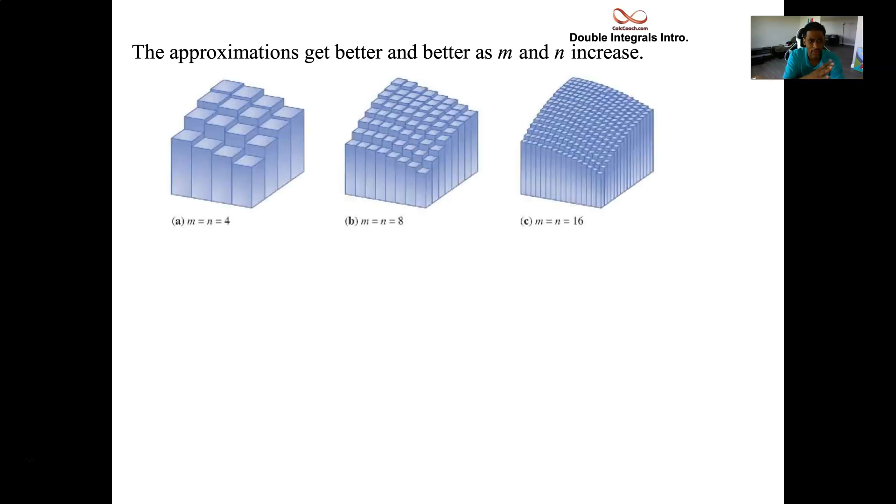This is the visual of it. If you do 4 and 4, you'll see a certain kind of inaccuracy. But as you increase and double that and double that again, you're going to get a finer and finer approximation. And so, like we talked about with single variable calculus.